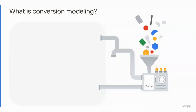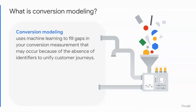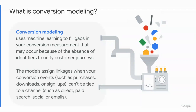So what is conversion modeling? When we encounter data that is subjected to browser or privacy restrictions, or there's disruption in the customer journeys across devices, the conversions generated are unable to be tied back to any previous channels. Therefore, marketers lose insight into the effectiveness of each channel. This is where conversion modeling comes into play. Conversion modeling uses machine learning to fill gaps in your conversion measurement that may occur because of the absence of identifiers. The model then assigns linkages when your conversion events — such as purchases, downloads, or sign-ups — cannot be tied to a channel such as direct, paid search, social, or email. Modeled conversions allow for more accurate reporting, so you're not left guessing where your conversions came from, and you can better optimize your campaigns.